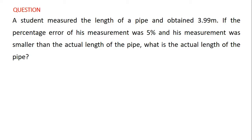Welcome back. We are on the topic percentages. In the previous video we solved two questions on percentage error. In this video we are going to solve another question on percentage error. The question is: a student measured the length of a pipe and obtained 3.99 meters. The percentage error of his measurement was five percent, and his measurement was smaller than the actual length of the pipe. What is the actual length of the pipe?